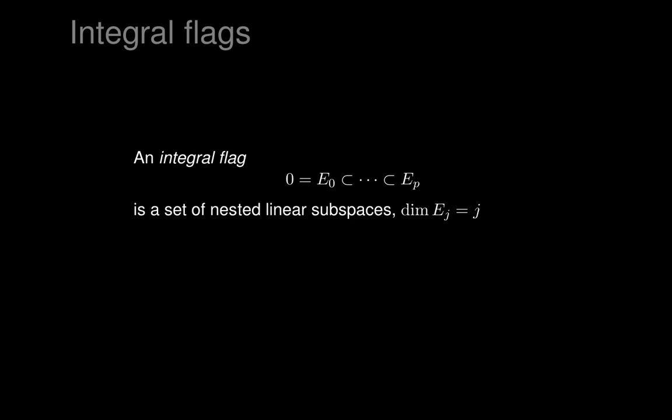This leads to the idea of successively constructing integral elements step by step, starting with the zero integral element. We'll call this an integral flag: a nested sequence of linear subspaces starting with the zero-dimensional subspace, then E_1 (one-dimensional), E_2 (two-dimensional), and so on, up to some E_P of dimension P. The dimensions go up 0, 1, 2, and so on. The flag stops at some dimension P, and we don't know in advance what P will be.